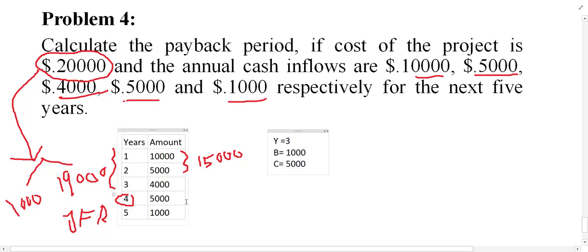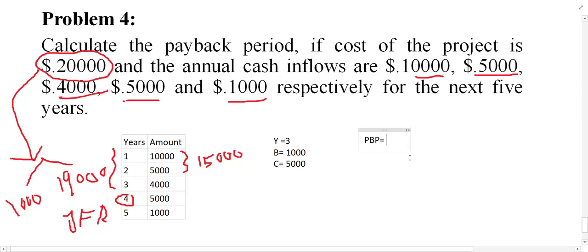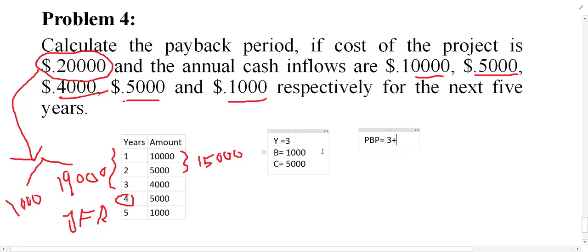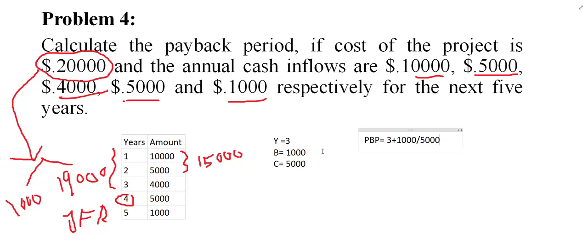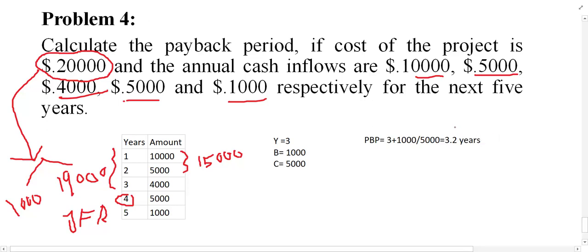Now put the formula. The payback period is equal to y plus b divided by c. Y is equal to 3 years, b is the balance of 1,000, and c is the inflow in the year of final recovery, which is 5,000. So payback period equals 3 plus 1,000 divided by 5,000, which gives us 3.2 years. This project can recover the original cost of investment within 3.2 years.